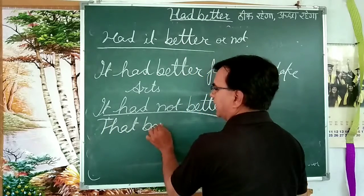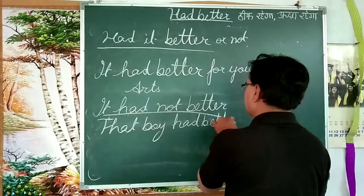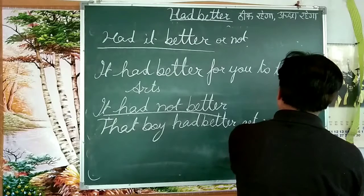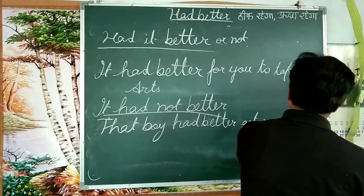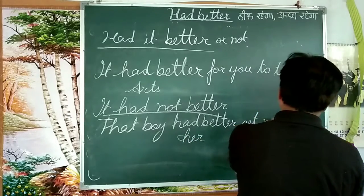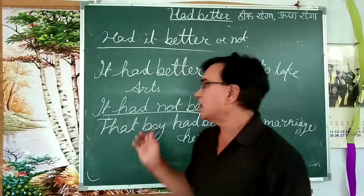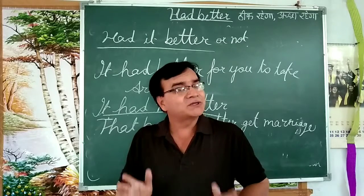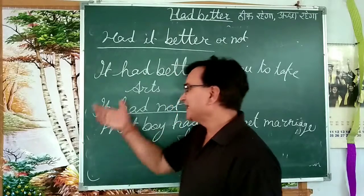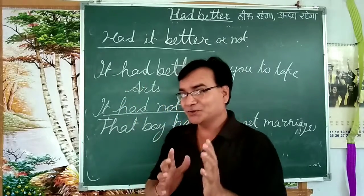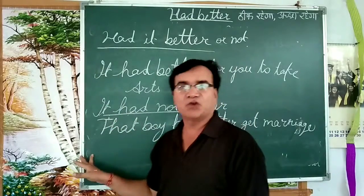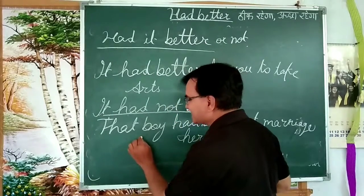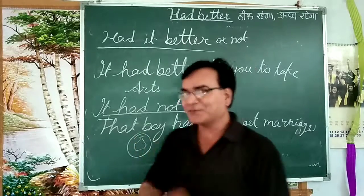That boy had better get marriage for her — that condition we use 'had better.' In this way we can use 'had better.' Now it had better for me to stop. It had better for you to subscribe my channel, because you will get too much of this kind of knowledge. So it had better for you to press the bell icon and subscribe my channel.